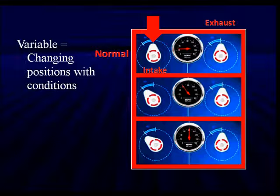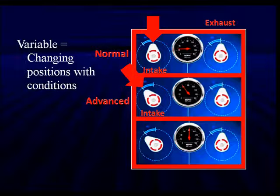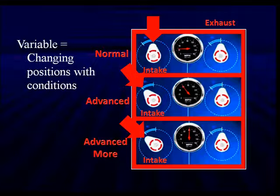In the center is our speedometer — we're doing about 20 miles an hour. Looking at our intake, which we're going to change in this example: at low speed we have normal position. As we bring the speed up to mid-range, we see the intake is advanced — it opens sooner. Then at the higher speeds in the bottom frame, it's advanced slightly more. So in this example, we're advancing the intake valve with increasing speeds.